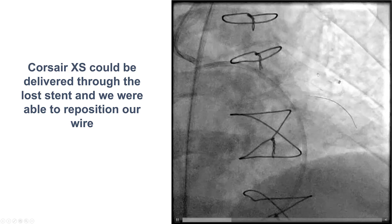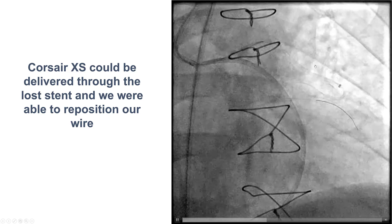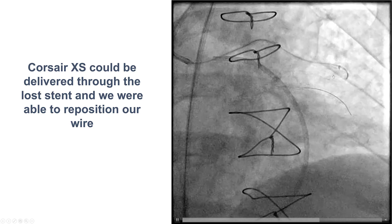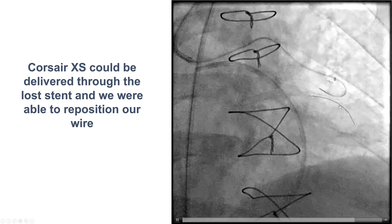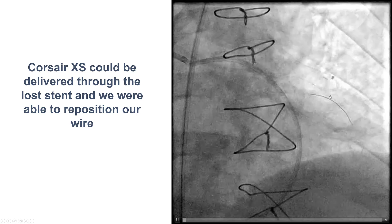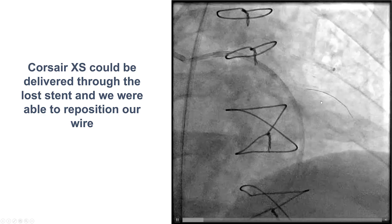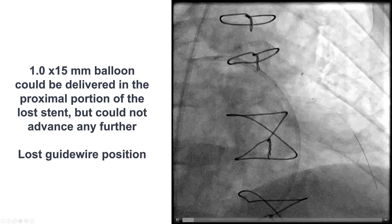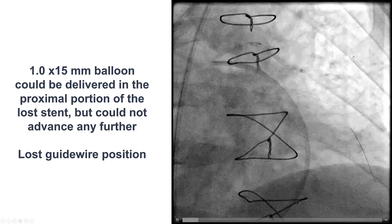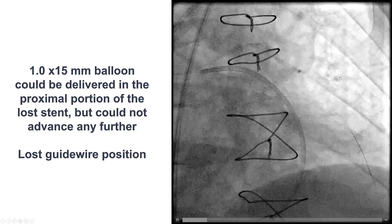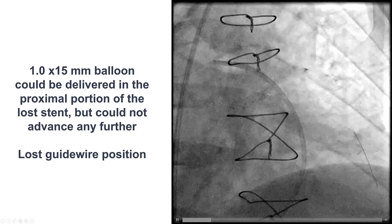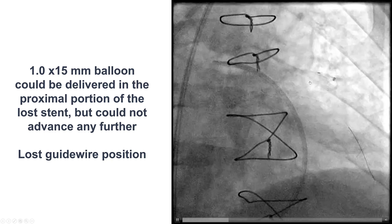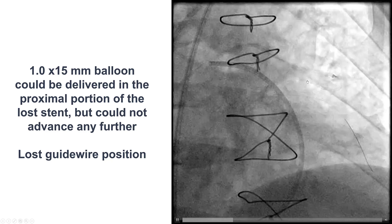After multiple further attempts, we were able to advance a Corsair XS microcatheter. We had loss of wire during the attempts to deliver balloons through the lost stent. We were able to get the 1.0 mm balloon a little further down, but not all the way through. In the process, we lost both guide and guide wire position.